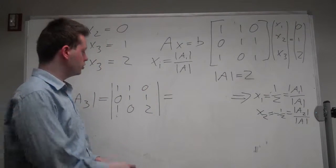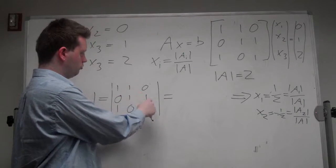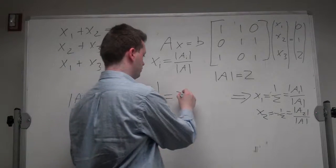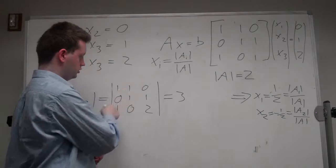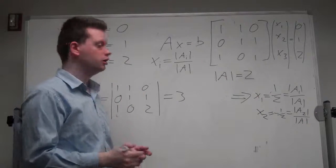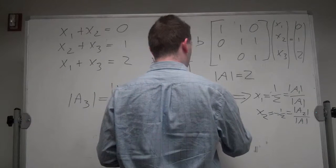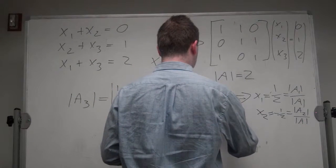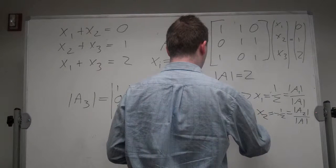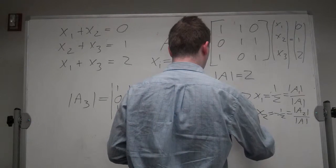And calculating the determinant is 2, plus 1, plus 0 is 3, minus 0, 0, 0, so just 3. And we get our x3, which is equal to 3 halves, which is equal to the determinant of A3 over the determinant of A.